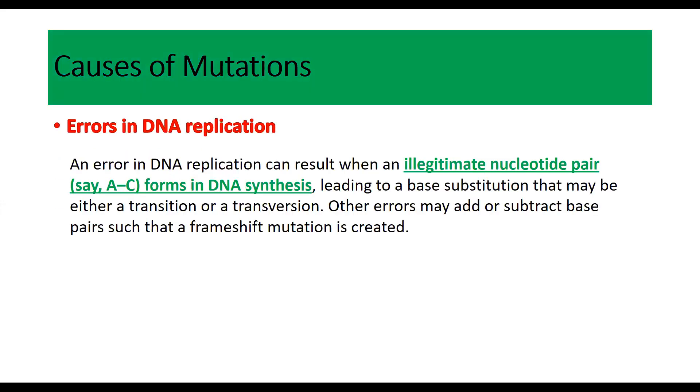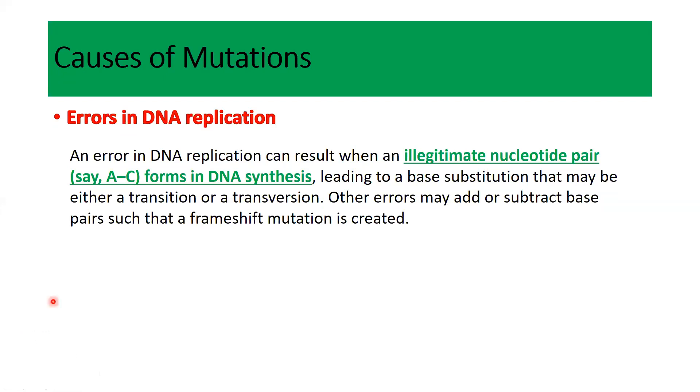First one is errors in DNA replication. When DNA is replicated sometimes mismatching or mispairing occurs which is against the rules. For example, when A can bind with C or pair with C, which is abnormal, it will lead to a base substitution in the new strand in the DNA. It could be a transition or transversion. Similarly, this change in nucleotide sequence can also lead to frameshift mutations and ultimately it can completely change the protein.